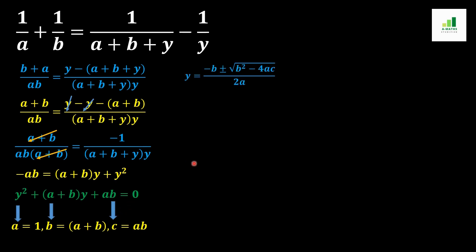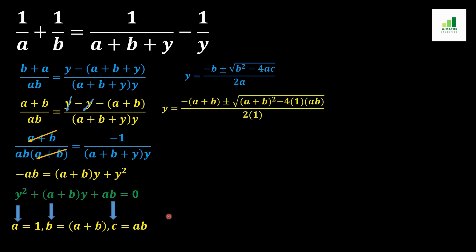As we know, the quadratic formula is y = (-b ± √(b²-4ac)) / 2a. We replace a = 1, b = (a+b), and c = ab to get: y = (-(a+b) ± √((a+b)² - 4·1·ab)) / (2·1).